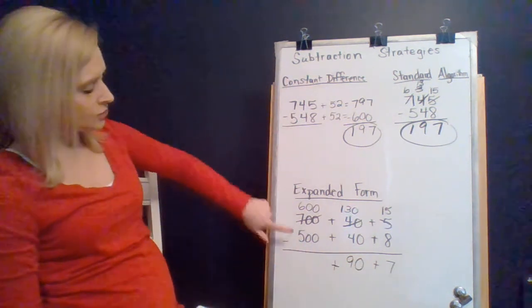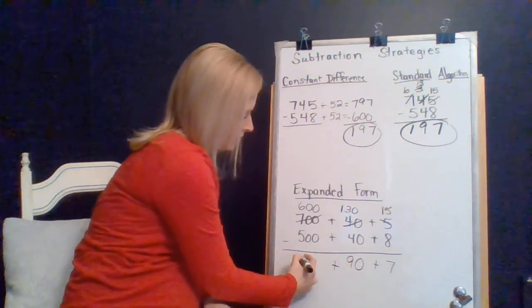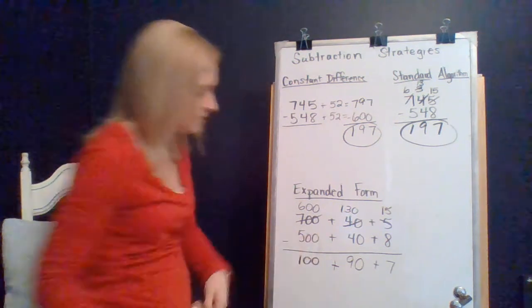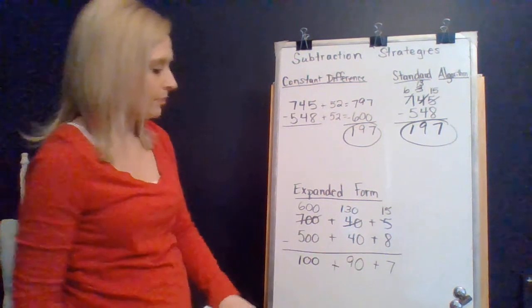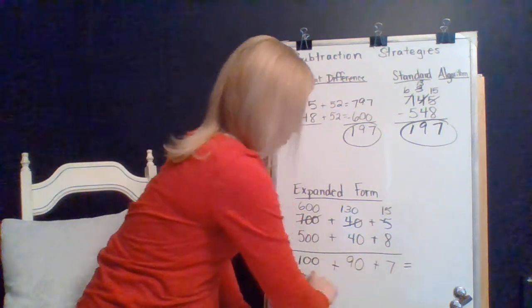And then we have the 600 minus the 500, which is 100. And then we have this expanded form that we're now going to put into standard or number form. And that would be 197.